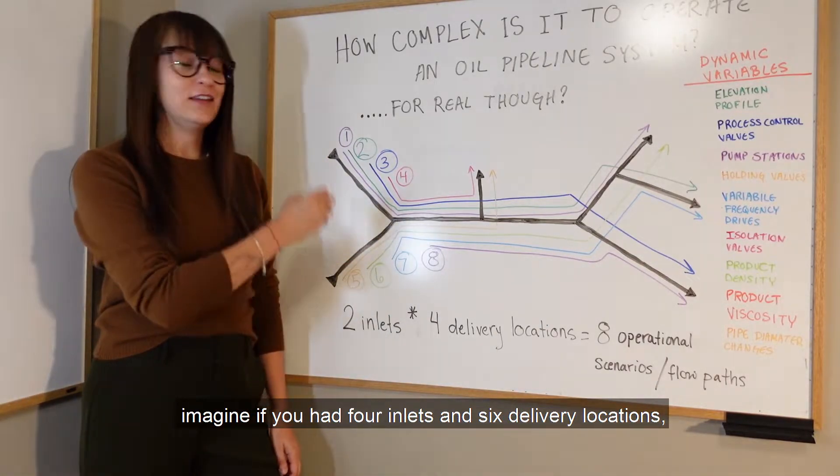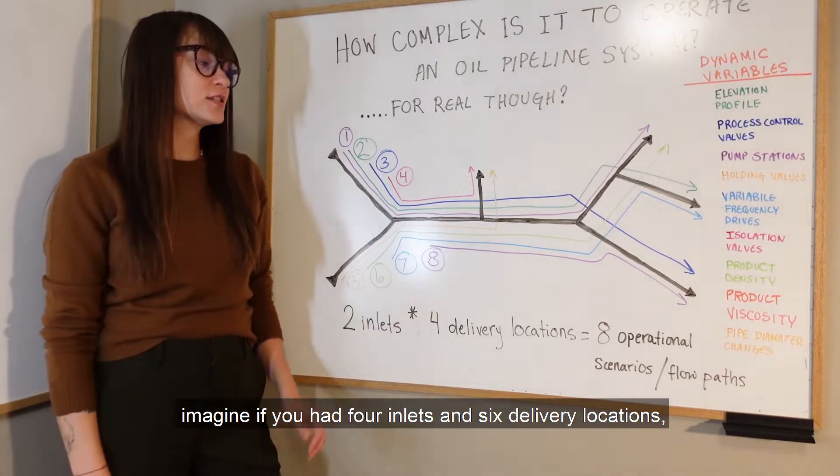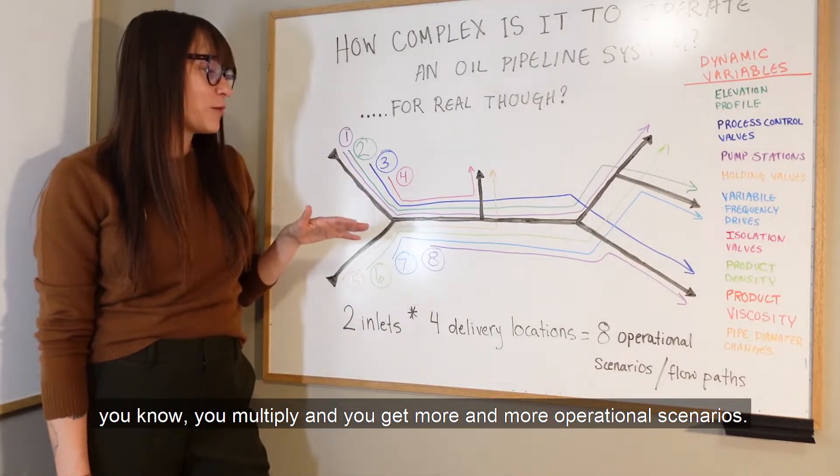On top of the fact that there's this many combinations for a system like this alone, imagine if you had four inlets and six delivery locations. You multiply and you get more and more operational scenarios.